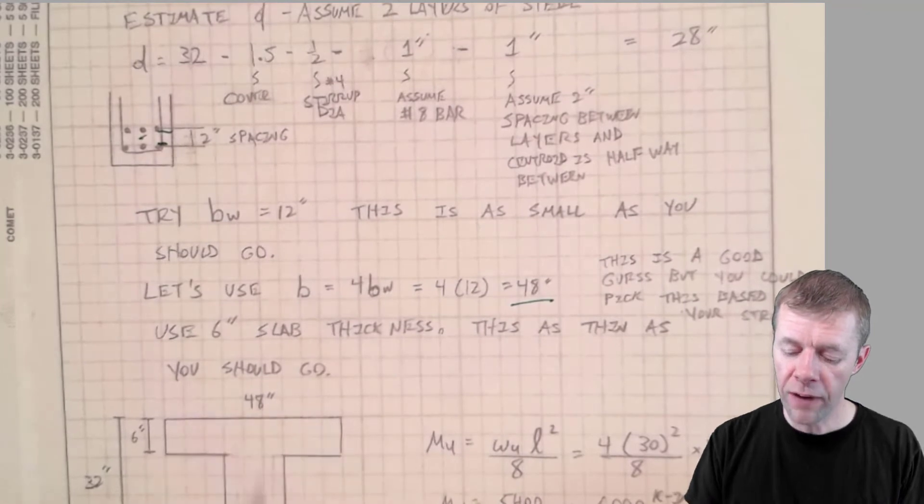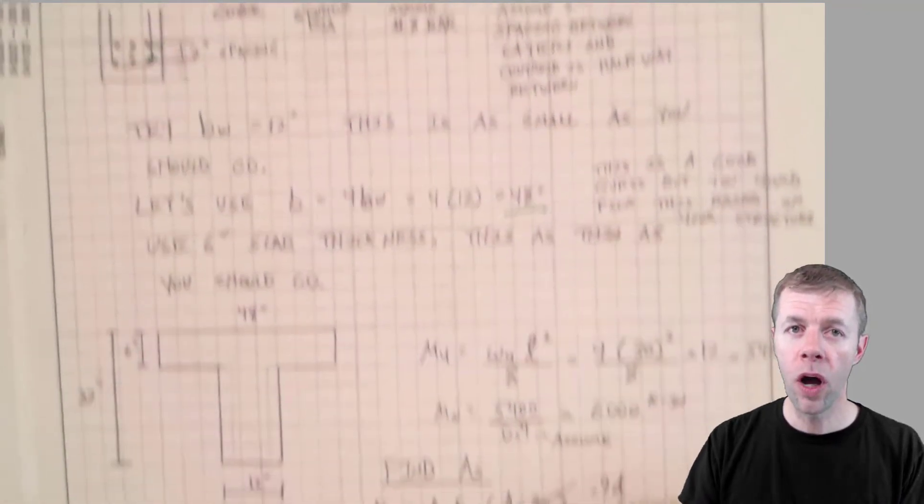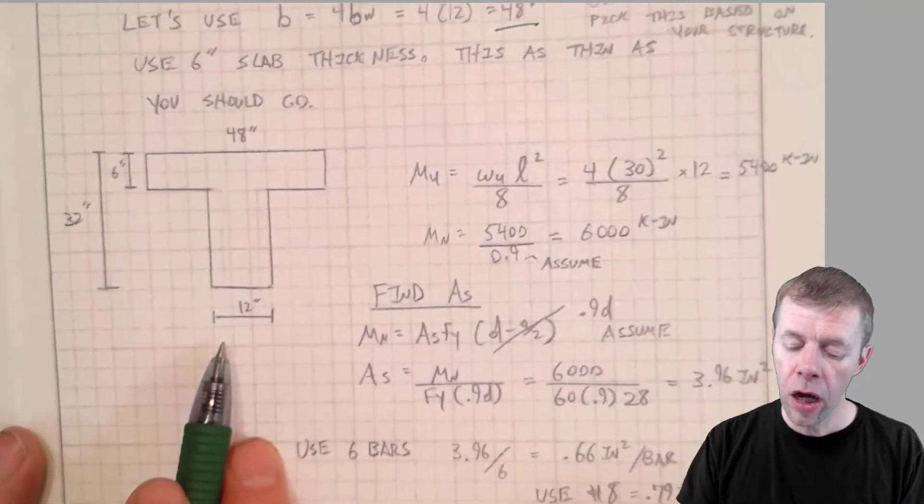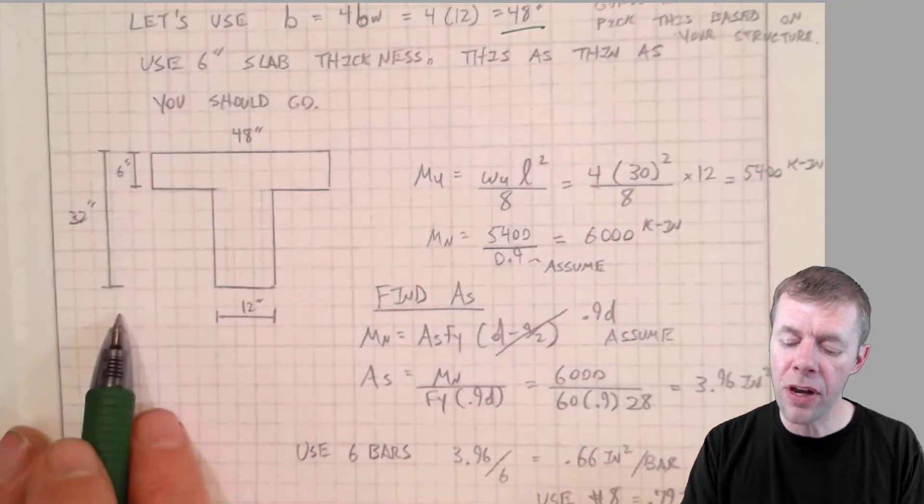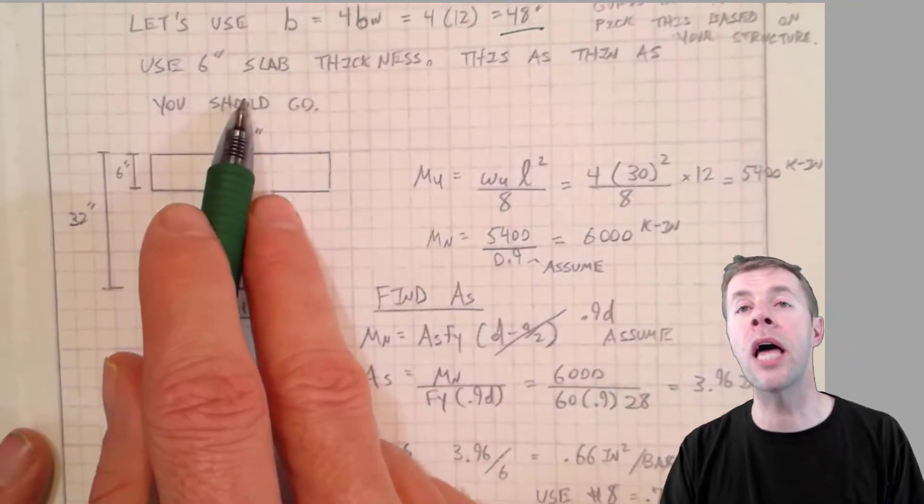So we have 48 inches here. We have 12 inches, 12 inches here. Our total height is 32. And then our slab thickness.